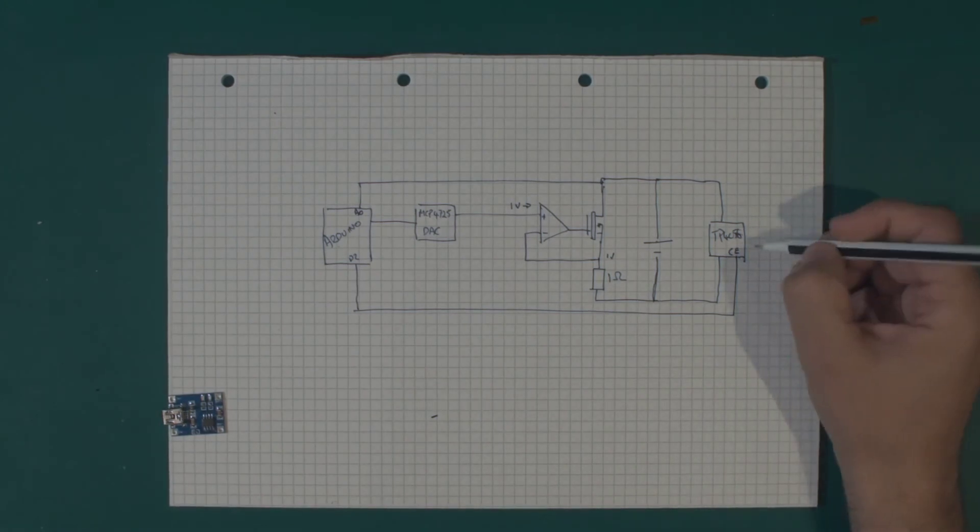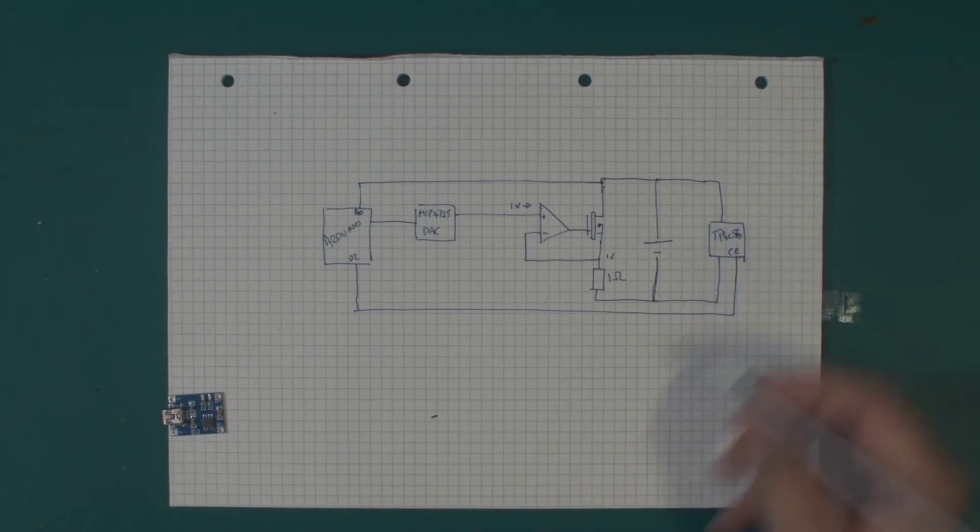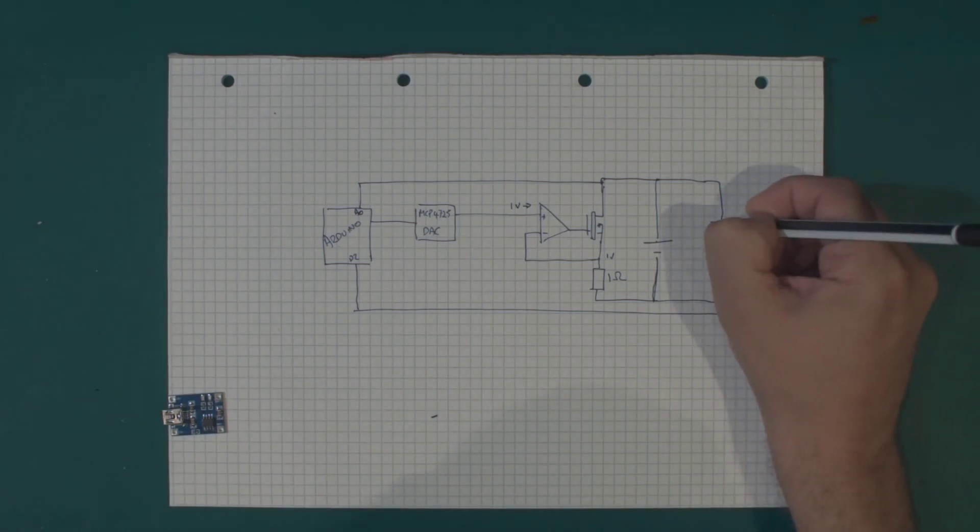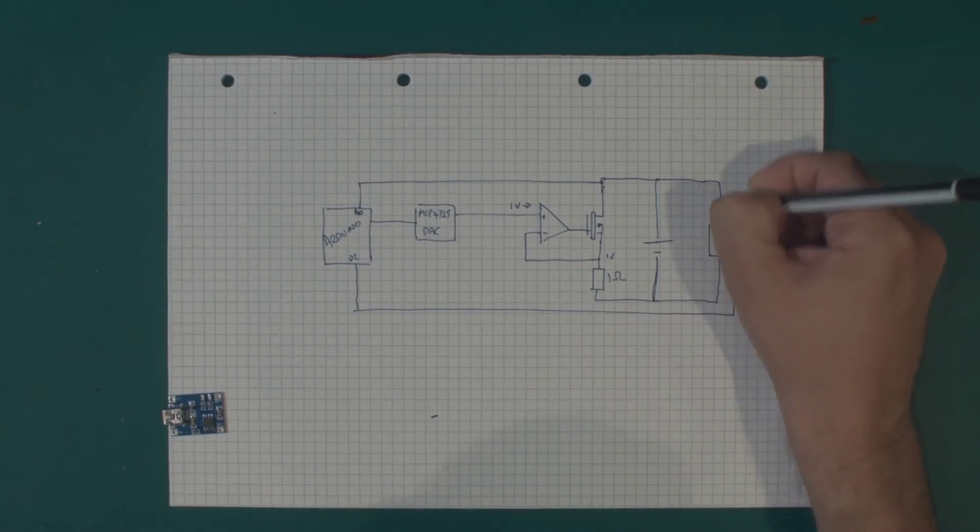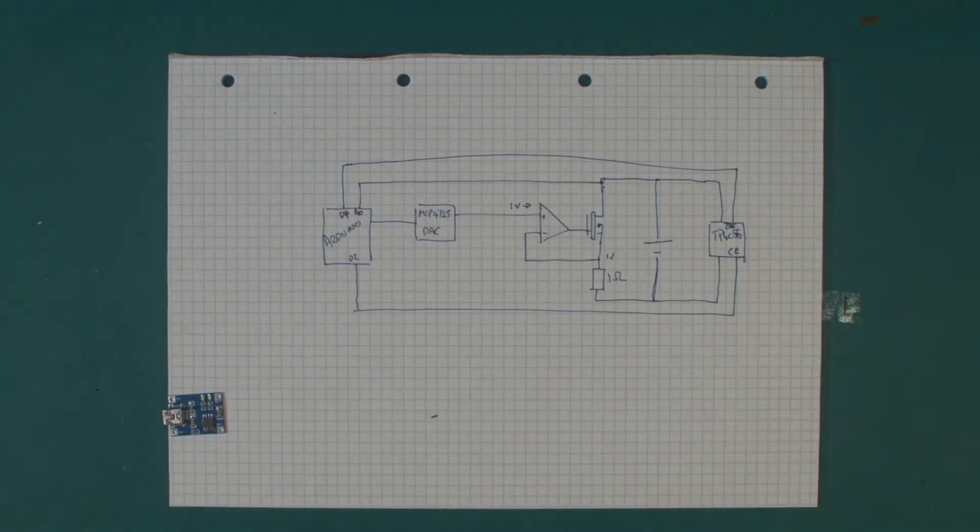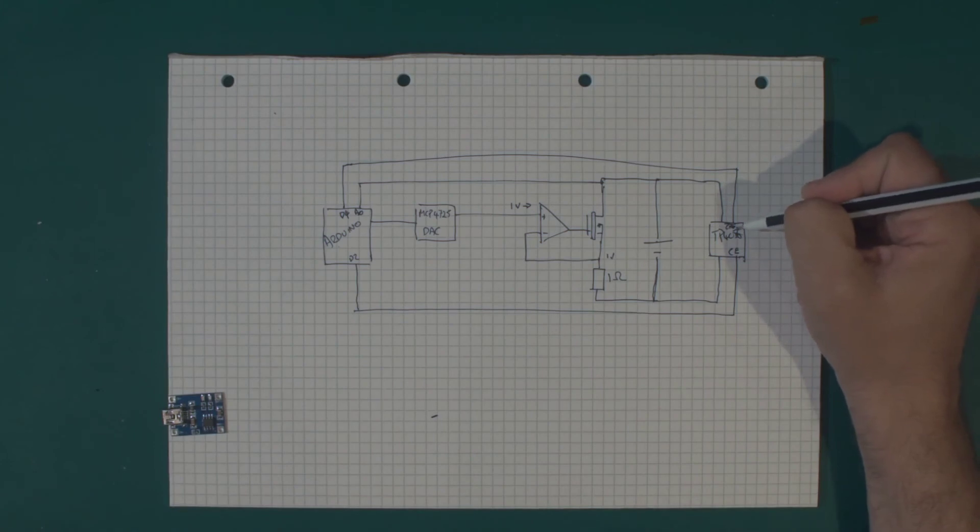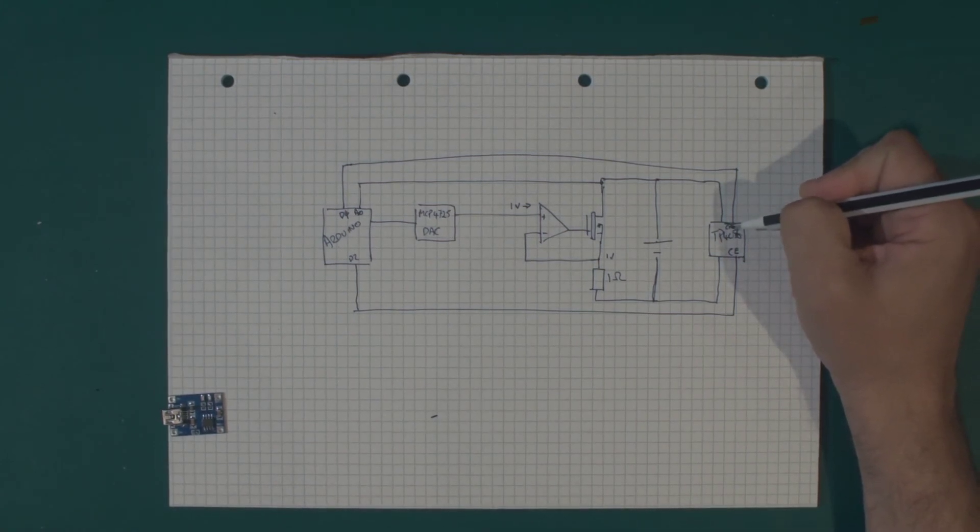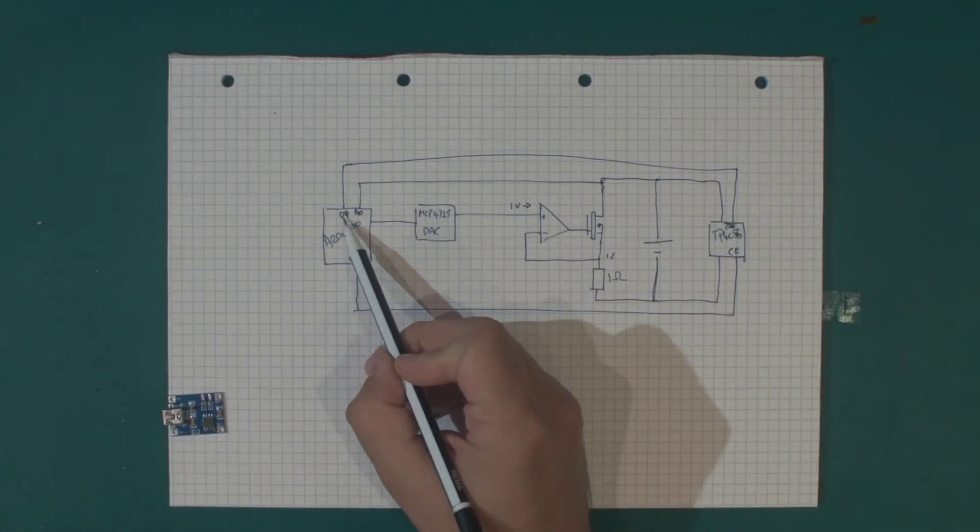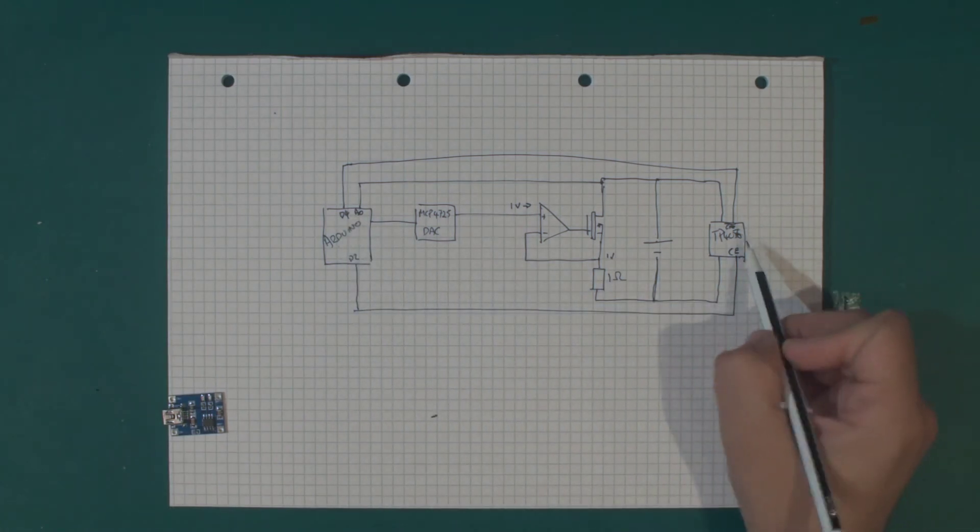But I also need a way of knowing when this is charged. There is also a charging and charged output on this board. So I have used the charge pin which is here, and I use D4 to connect to that one. What that means is when the charge pin on the TP4056 is enabled, it pulls this down to ground.